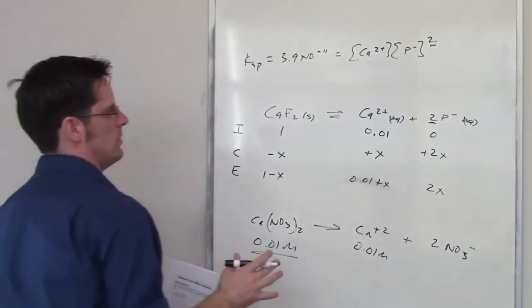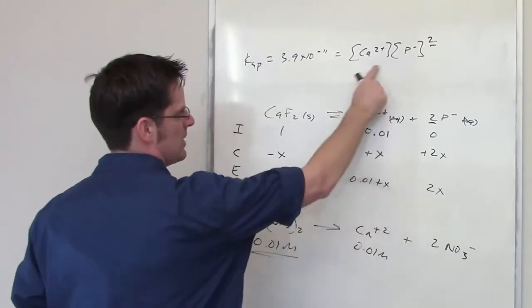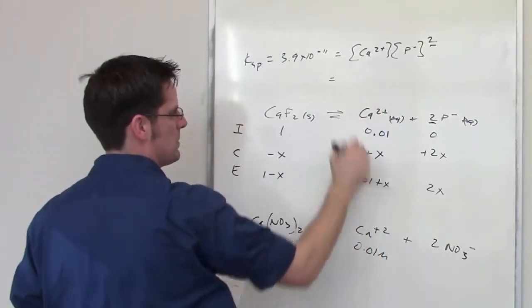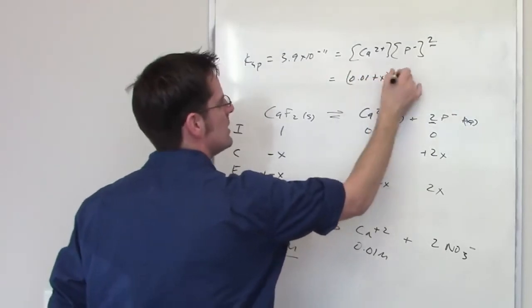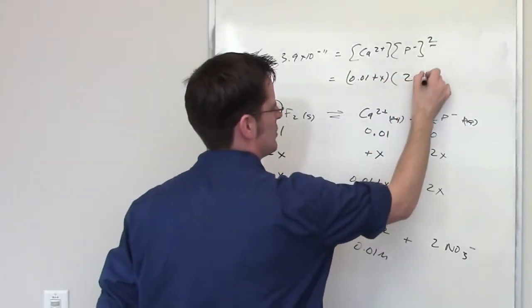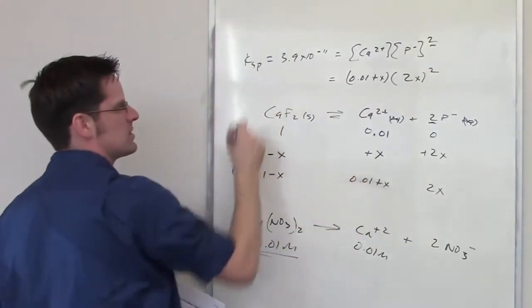Okay, so what I have to do then is take these values and throw them into the corresponding locations in the expression. Calcium 2 plus is equal to 0.01 plus x. Fluoride is going to be 2x, and I have to square that, and I set that equal to this number. Now here's a trick I've talked about elsewhere.